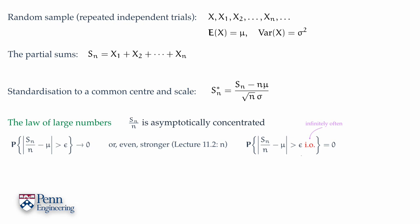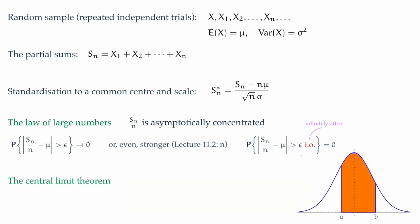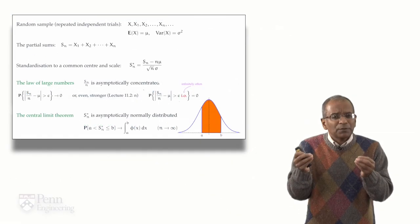The central limit theorem adds flesh to these bare bones and says, in the region around the center, you have a normal distribution, a bell curve emerging. And so a formal statement is that a suitably standardized, normalized version of Sₙ, Sₙ*, is asymptotically, for large enough values of n, normally distributed. And of course, what this means is that the probability that Sₙ* takes values in any interval is asymptotically governed by the area under the bell curve over that interval. So these are the two fundamental limit laws.